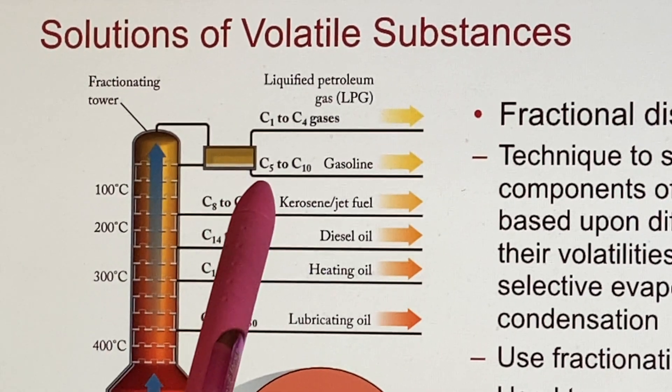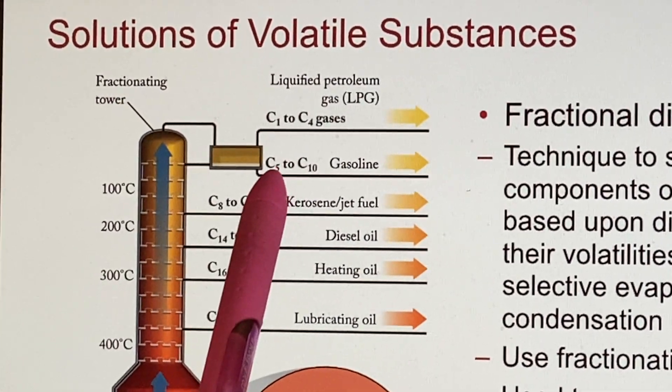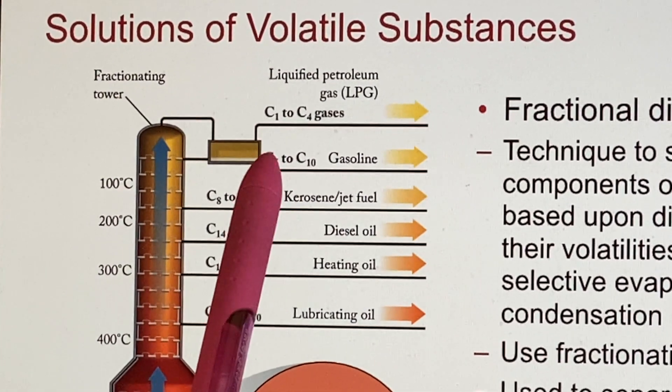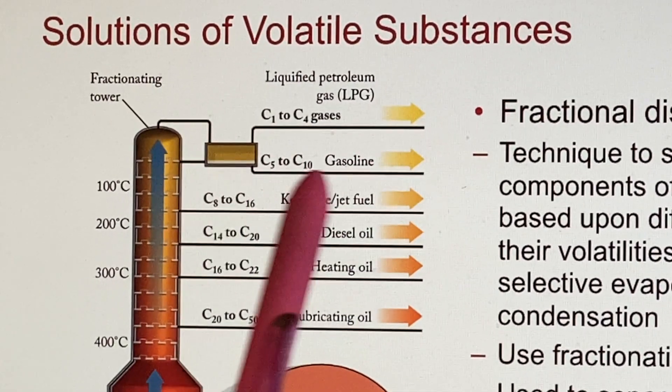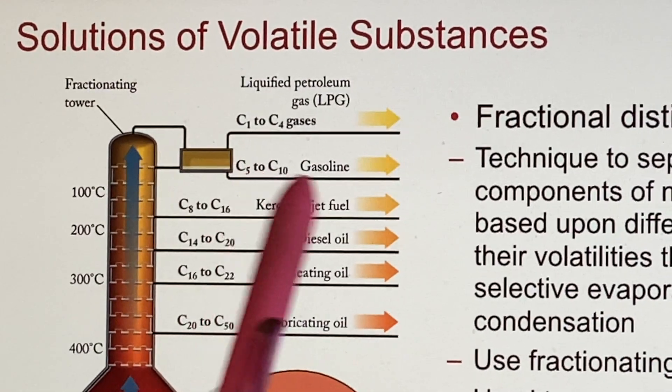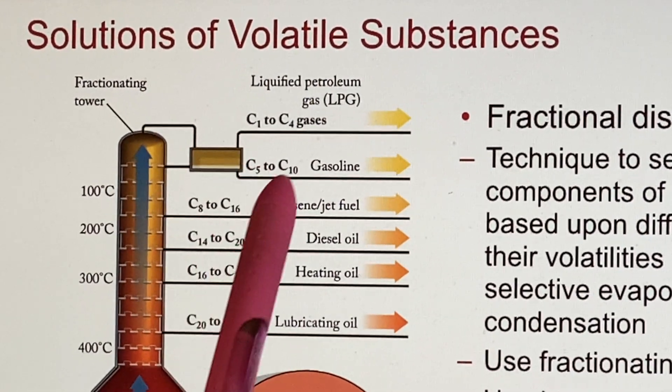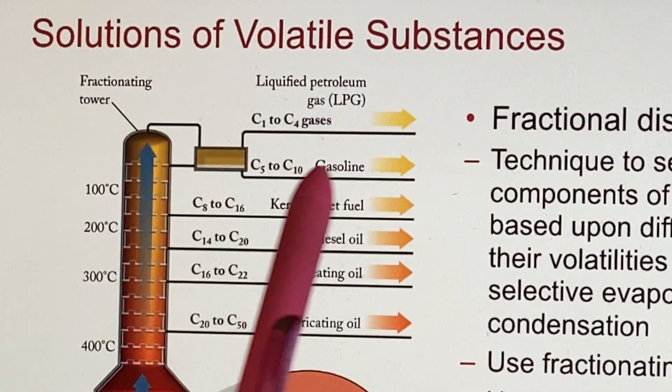But octane is the one that they always talk about at the gasoline pumps because that's the temperature that is burning the most efficiently within an internal combustion engine. This is why they keep telling you what the octane rating is, but it actually is a mixture from C5 to C10, the chain is 5 to 10 carbons.